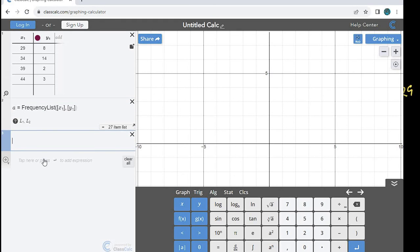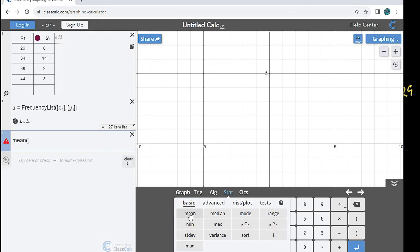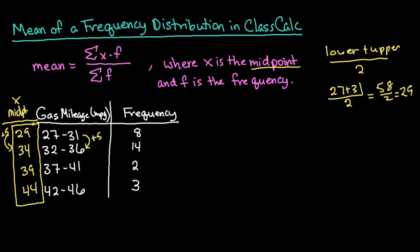So now that I have a frequency list with the values in there, I can just type in the word mean. Or I could have also come to stat and just selected mean. And then I want to find the mean of the frequency distribution A, and it will just find the mean of these values, 34. So 34 would be the answer to the mean of this frequency distribution.